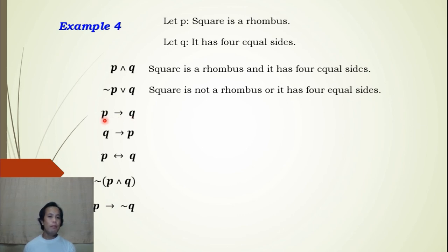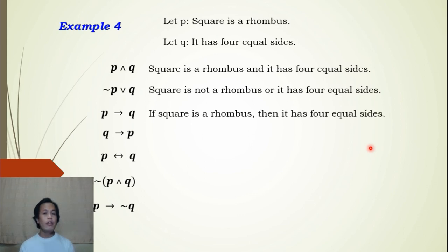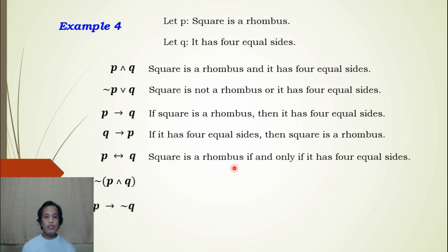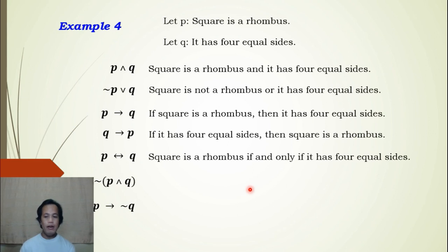For p → q (implication): If square is a rhombus, then it has four equal sides. For the reverse, q → p: If it has four equal sides, then square is a rhombus. For biconditional p ↔ q: Square is a rhombus if and only if it has four equal sides. For the negation of the conjunction (~p ∧ ~q): Square is not a rhombus and it has no equal sides, since both p and q are negated.